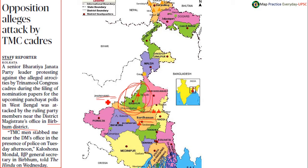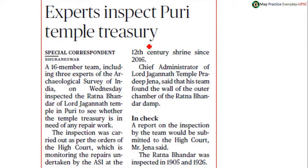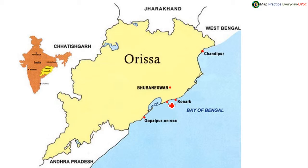Experts inspect the Puri temple for its treasury. The Puri temple is called the Lord Jagannath temple and it is located in Puri. Today we have news at two points — Berhampur and Puri — and both are at adjacent locations to Chilka Lake. Chilka Lake is also a Ramsar site.